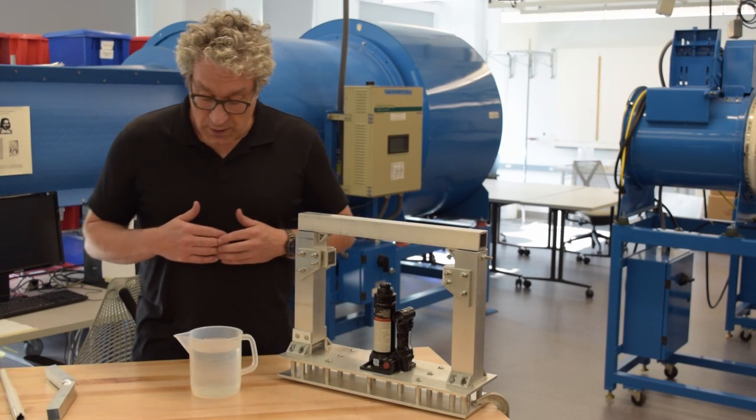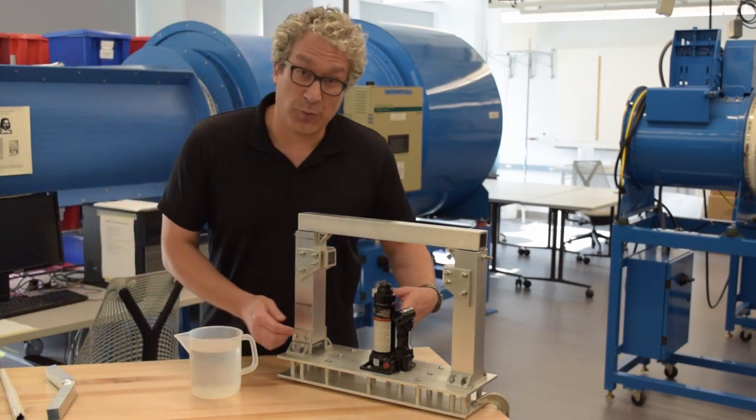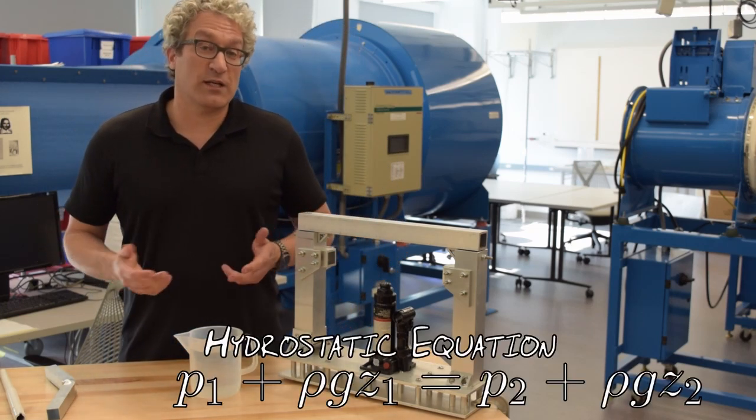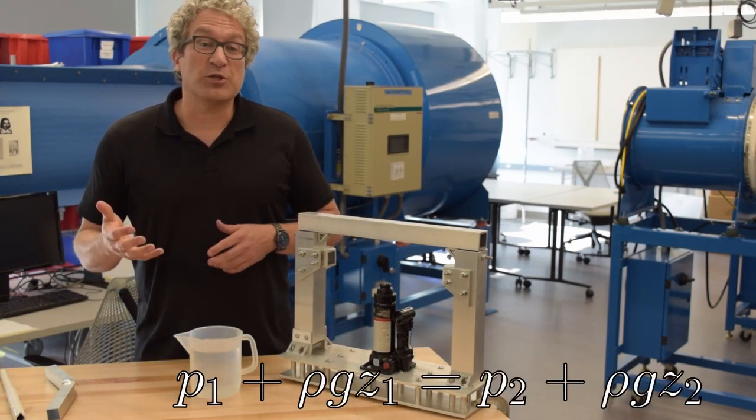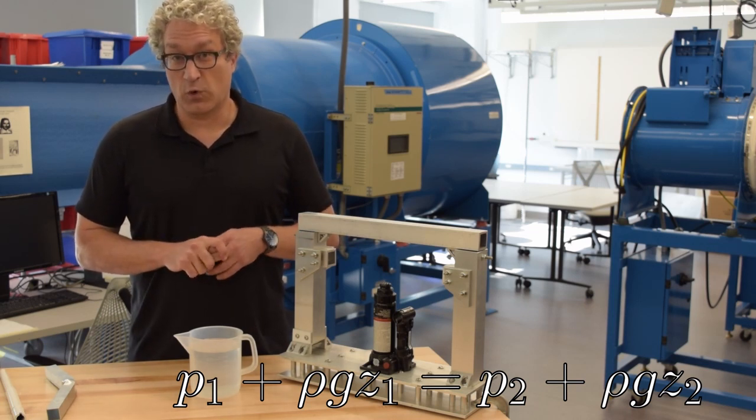So for motionless fluid, like the water inside this beaker, or as we would approximate the oil inside this hydraulic jack, we can generate the hydrostatic equation, which tells us that the pressure is a function only of its variation with altitude or with elevation.